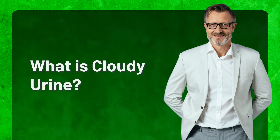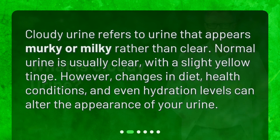What is cloudy urine? Cloudy urine refers to urine that appears murky or milky rather than clear. Normal urine is usually clear with a slight yellow tinge. However, changes in diet, health conditions, and even hydration levels can alter the appearance of your urine.